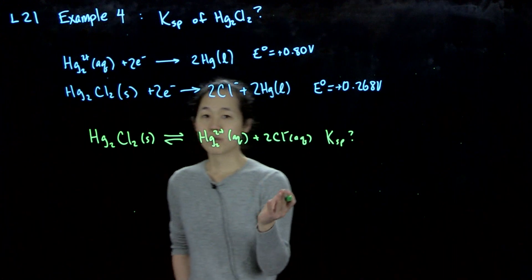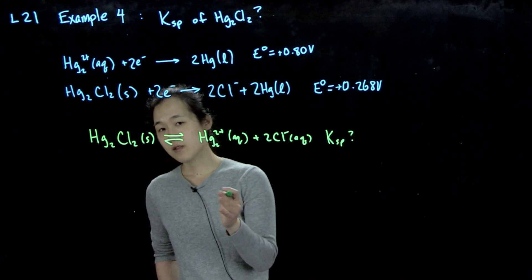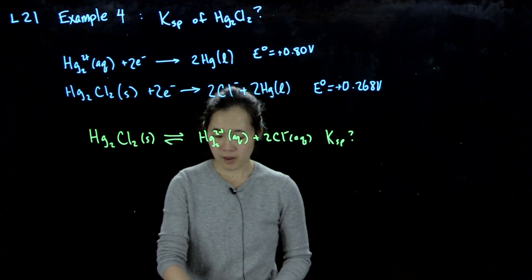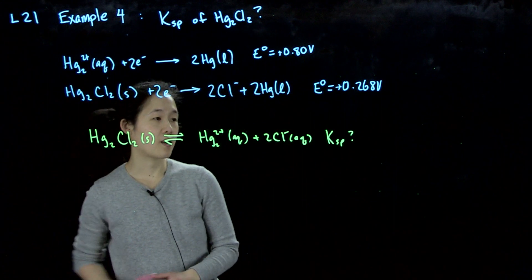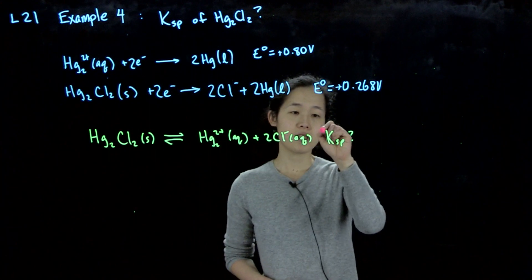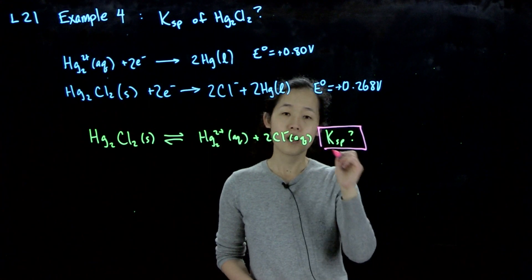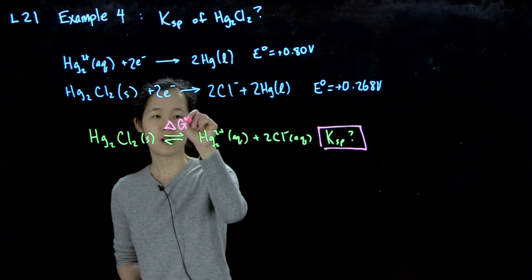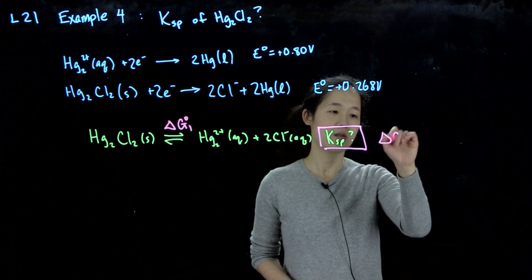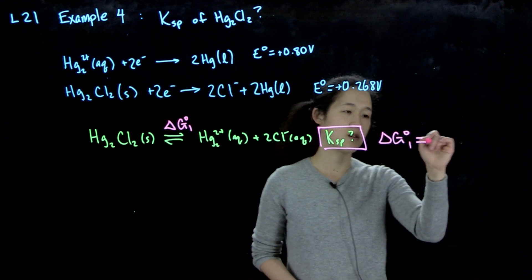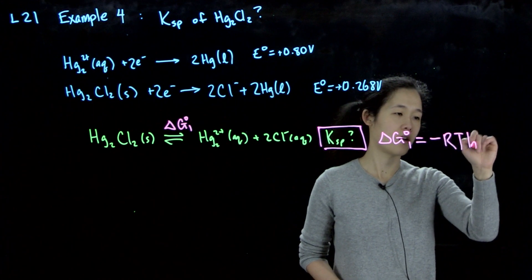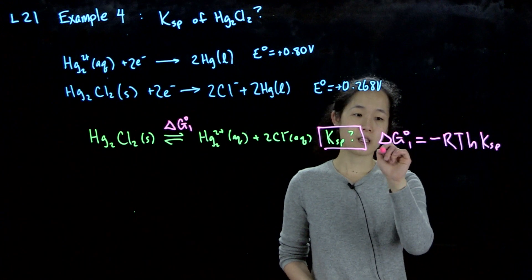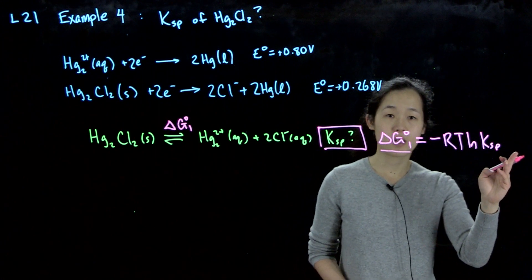One way to approach this would be to think about the thermochemical cycle. So I'm going to put this value that we want to calculate. We know Ksp, this is the question that we want to know. But if we assign this equation to delta G not 1, then delta G not 1 must equal negative RT log Ksp. So if we can figure out the thermochemical cycle to give us delta G1, we can then get to this equilibrium constant.